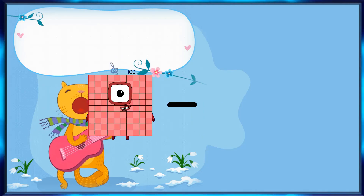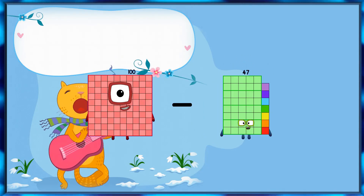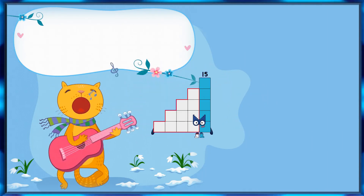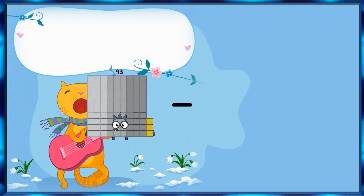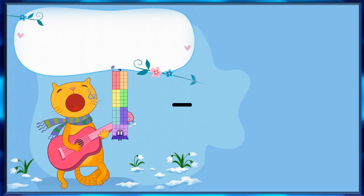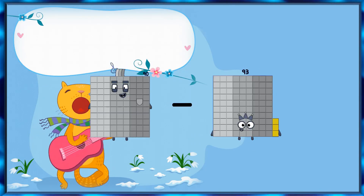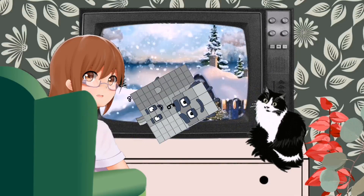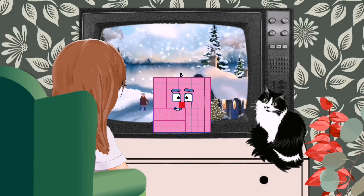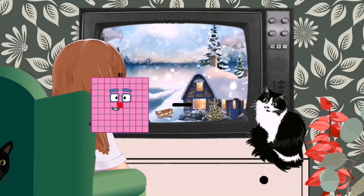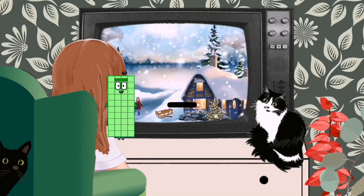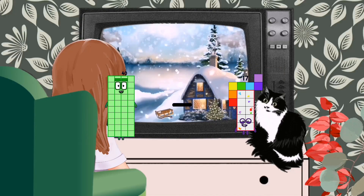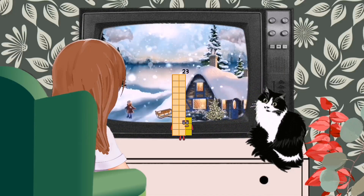100 minus 85 equals 15. 90 minus 9 equals 81. 40 minus 17 equals 23.